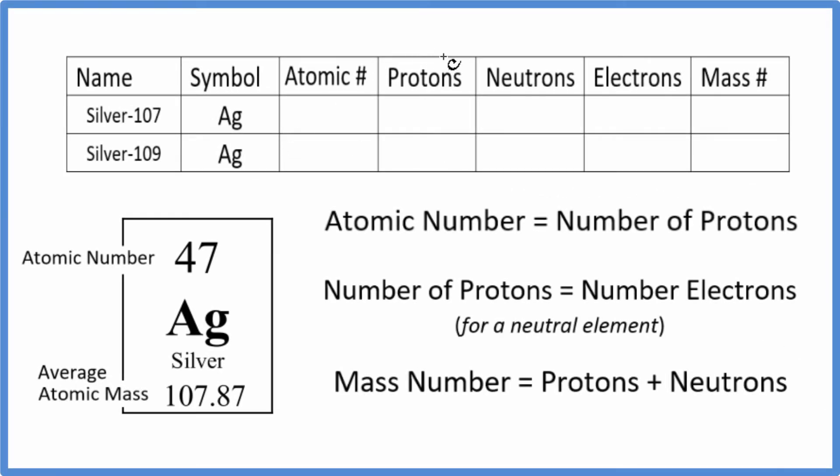In this video, we'll find the number of protons, neutrons, electrons, and the mass number for Ag. That's silver. So for silver, there are two isotopes right here, these two major isotopes.